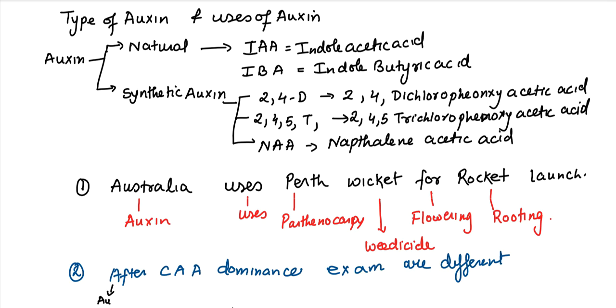After, you remember auxin. F, you remember function. And what is the function which we need to remember? C, cell means cell division. A, you remember abscission. A is apical dominance. Exam, remember xylem with X. Different, you remember differentiation.